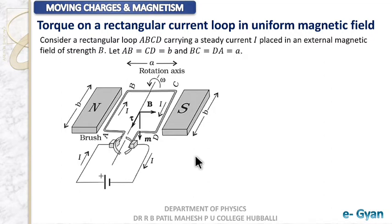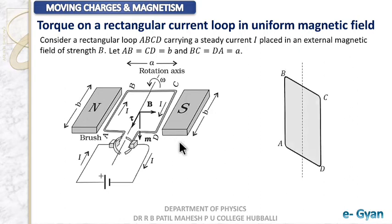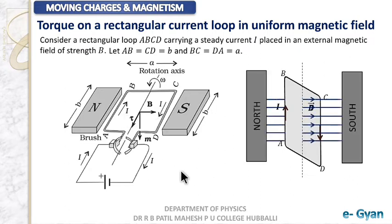We can understand the concept nicely using the NCERT diagram, but it introduces many complications. So we are taking a simpler one to understand the concept more smartly. We take a rectangular loop ABCD with current in a similar manner, with north and south poles, and a uniform magnetic field going from north to south pole.